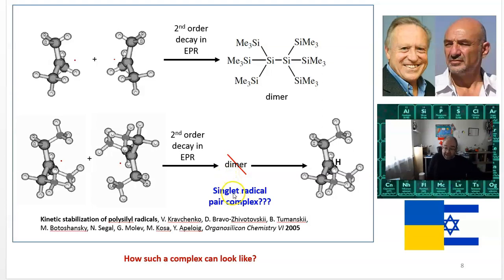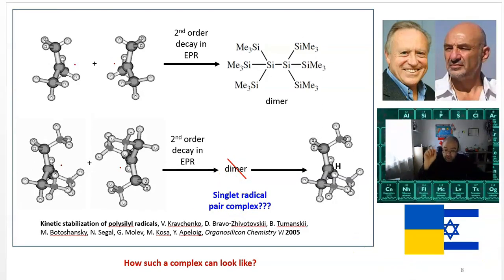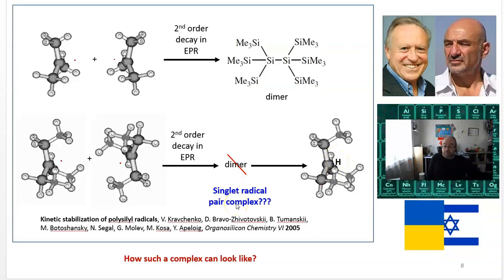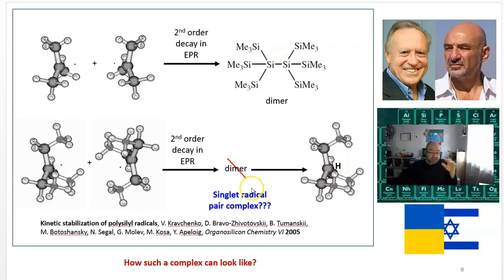We published without discussing this unusual result, but now I think it can be actually a singlet radical pair complex. If one of the radicals changes the spin upon interaction with another, it's like a dimer without a bond, and that will result in second-order decay. Only after that they react to abstract hydrogen from the hydrogen source.